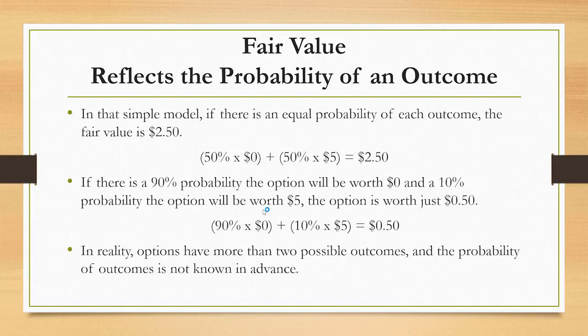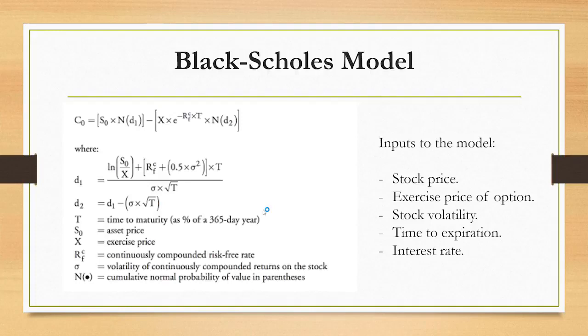Let's say there's a 90% probability the option will expire worthless. Well, the fair value of the option is now reduced to just $0.50. So the fair value of an option is simply the weighted value of all of its possible outcomes discounted back to the current price.